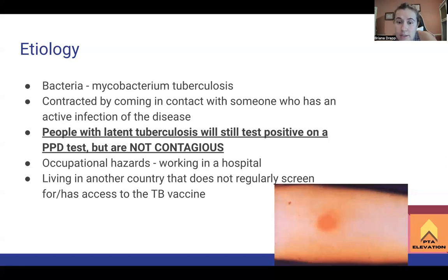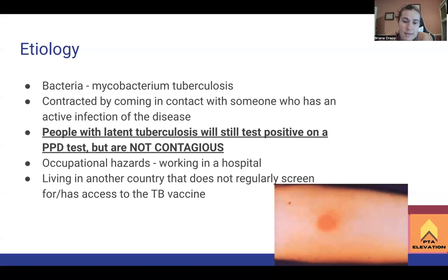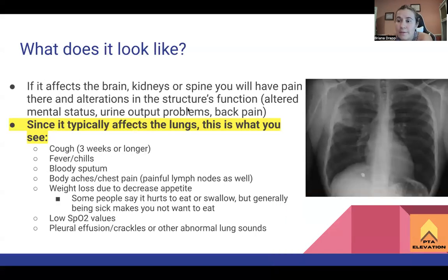A lot of underdeveloped countries don't regularly screen for tuberculosis like we do in the United States, or they don't actively have the TB vaccine available. There is a tuberculosis vaccine - pulmonologists may get it to make sure they don't end up getting TB from the patients they see. You can also get tuberculosis if you travel to foreign countries doing missionary work, free clinic work, or just visiting - if you come in contact with people who have tuberculosis, you might contract it.